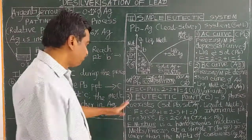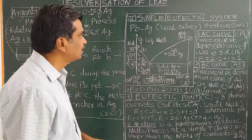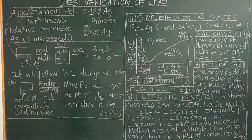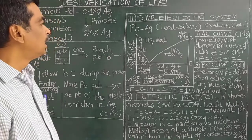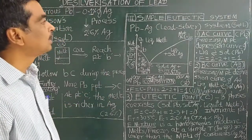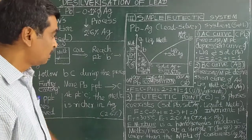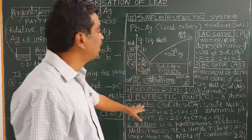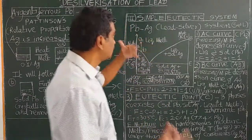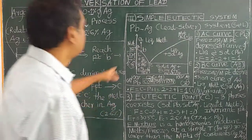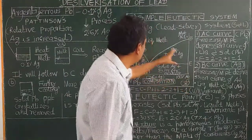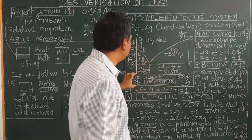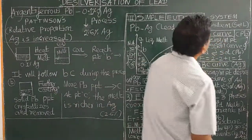This topic is very important. They will ask it in 10 or 15 mark questions and in several competitive examinations. They will ask: 'What is a eutectic system?' and 'What are the various features of the lead-silver eutectic system?' They may also ask you to discuss the simple eutectic system, in which case you substitute A and B instead of lead and silver.